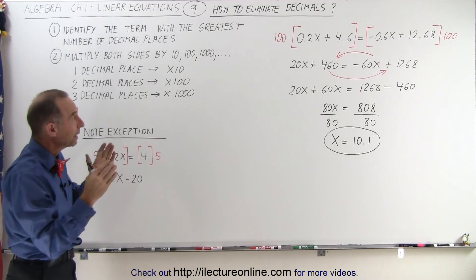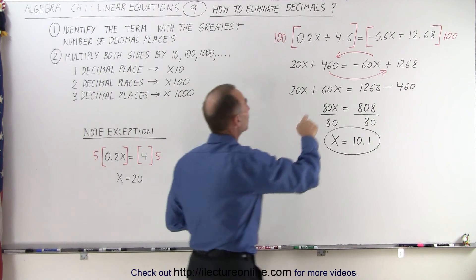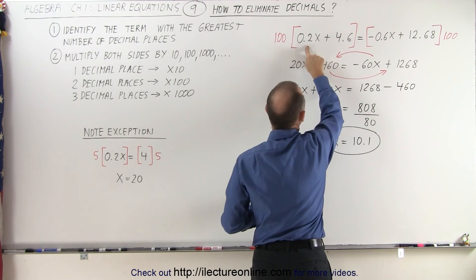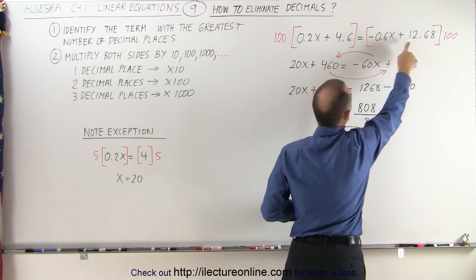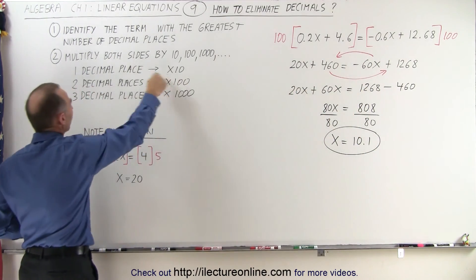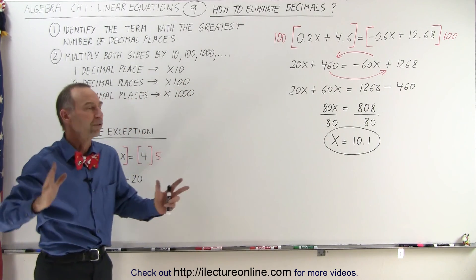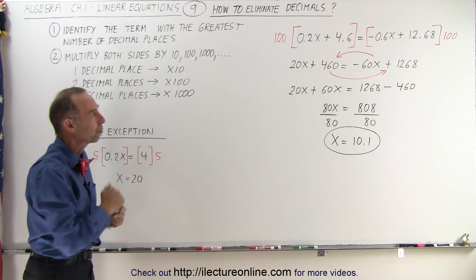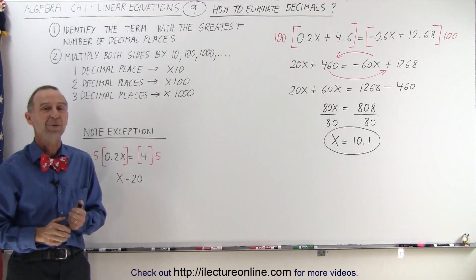So again, the main idea here is how to eliminate decimals. We look at all the terms. We count the number of decimals in each term. We have one here, we have one here, we have one here, but we have two decimal places here. That means we're going to multiply both sides of the equation by the number 100 in order to eliminate all decimals from the equation. And then we solve it the way we normally solve a linear equation. And that's how it's done.